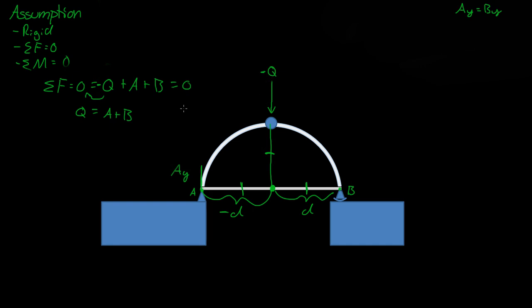So now that we know that, and if we look at Q, we know that Q is completely Y. There's no X component of Q. So QX is zero.